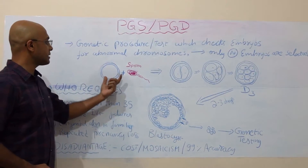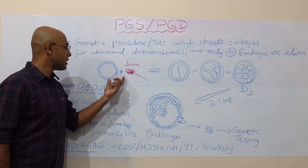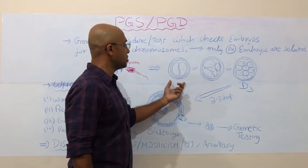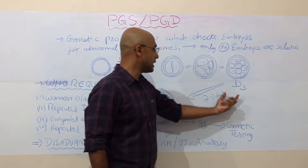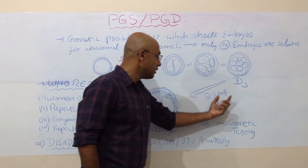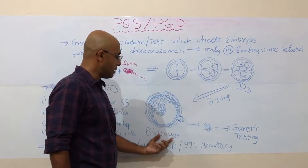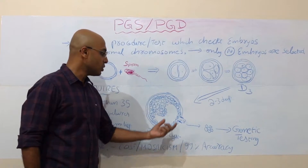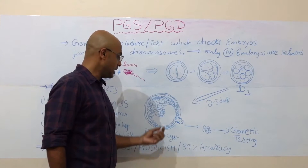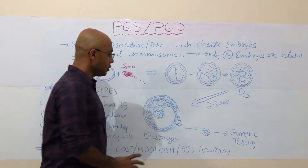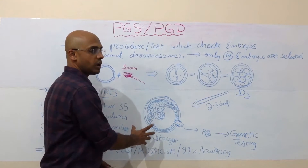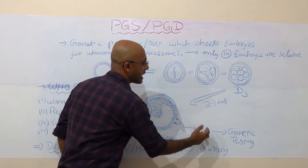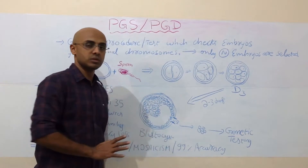In IVF or ICSI procedure, we fertilize the egg and the sperm in the lab, which will develop first into 2 cells, then into 4 cells by day 3. We grow those day 3 embryos 2 or 3 days more to make them a blastocyst — that's a day 5 embryo. On this day 5 embryo, we do a biopsy — an embryo biopsy — and take out a few cells. The blastocyst embryo has plenty of cells, so taking 2 to 3, or maximum 5 to 6 cells, will not harm the blastocyst.